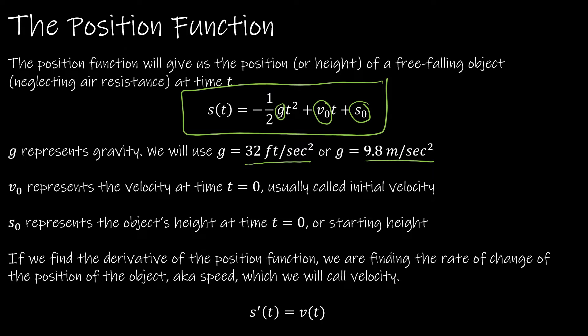Sometimes they're going to give you the position function; sometimes they're going to give you the information you need to write it. The important thing to understand is that when we take the derivative, we're finding the slope of the function, or the rate of change. If I'm finding the rate of change of position, that's actually just the velocity. So taking the derivative of the position function gives us the velocity function, which tells us the velocity of the object at time t.